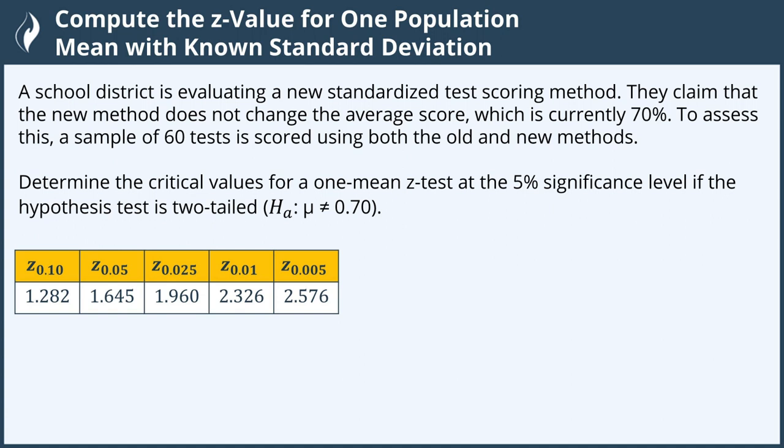A school district is evaluating a new standardized test scoring method. They claim that the new method does not change the average score, which is currently 70 percent. To assess this, a sample of 60 tests is scored using both the old and new methods.